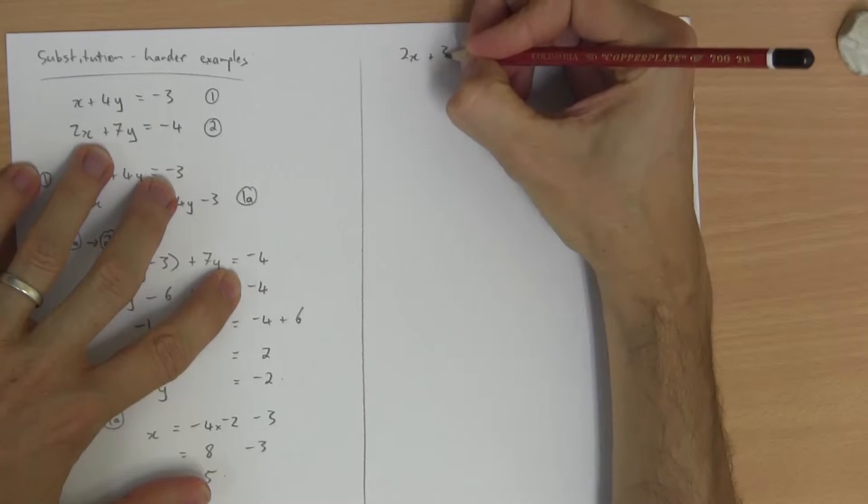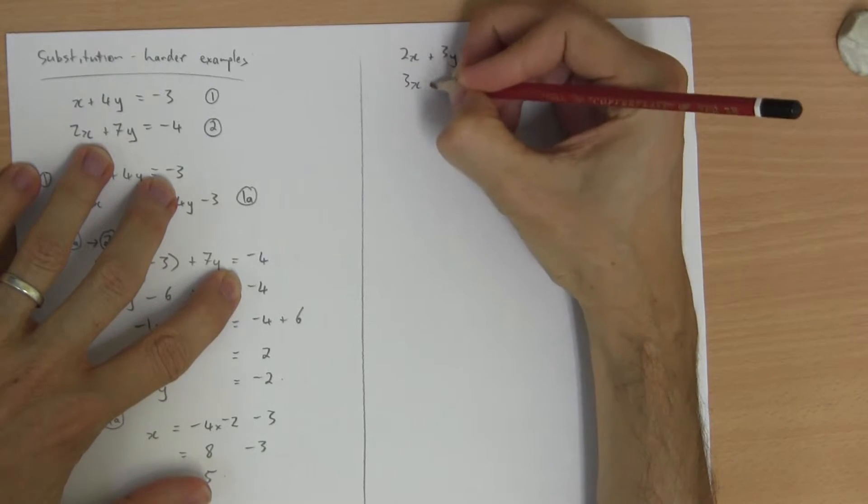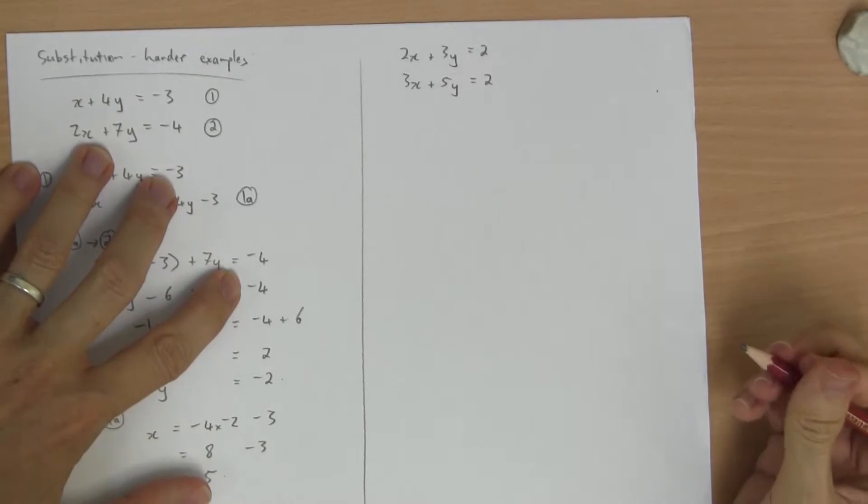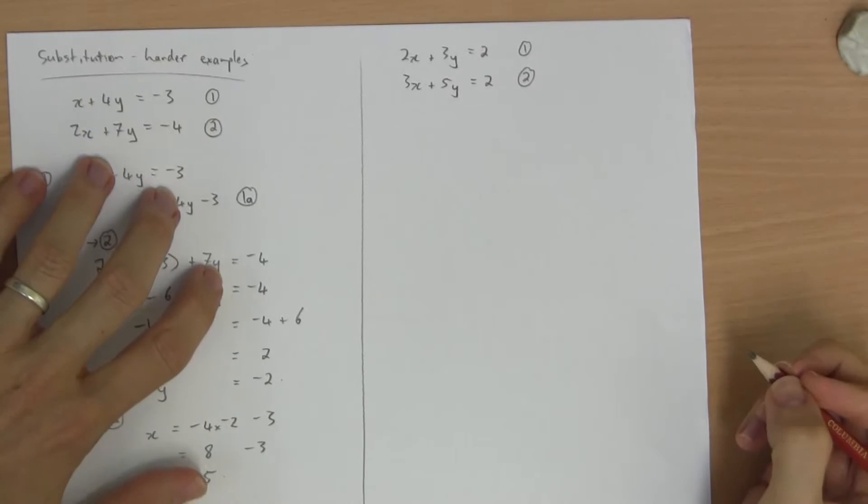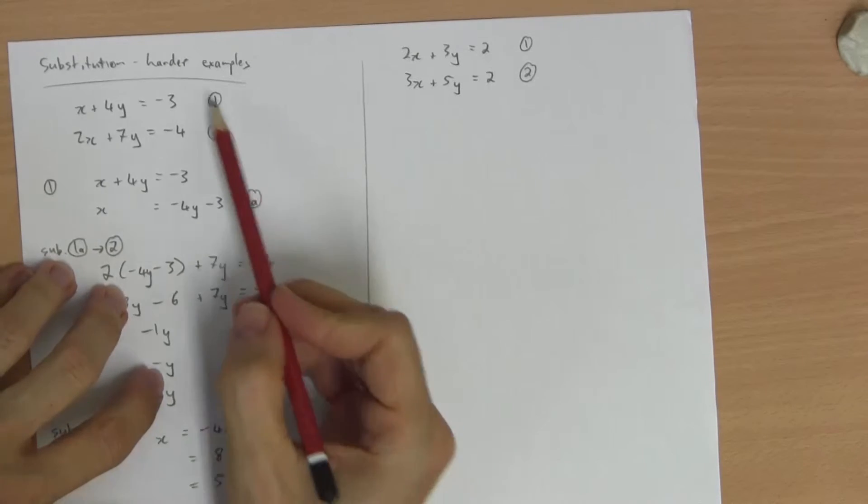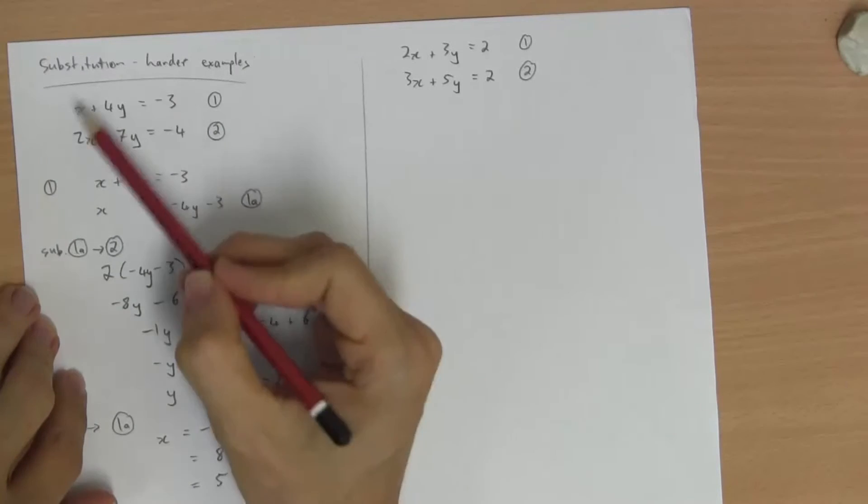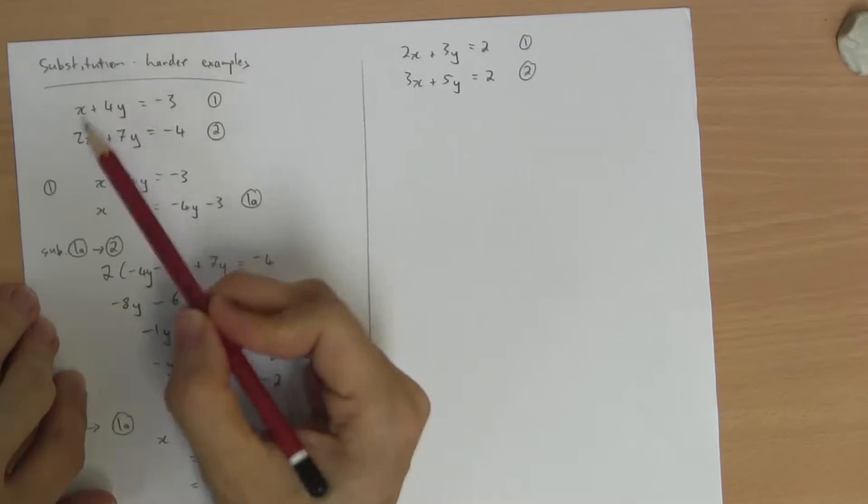2x plus 3y equals 2. 3x plus 5y equals 2. Number 1. Number 2. Now, the one we just did, this one over here, is easy enough to do with substitution. This rearrangement's pretty quick and easy. I would probably still use elimination, but substitution is a very good method.